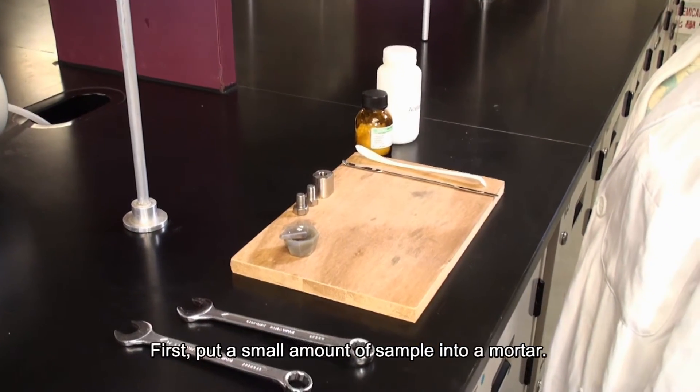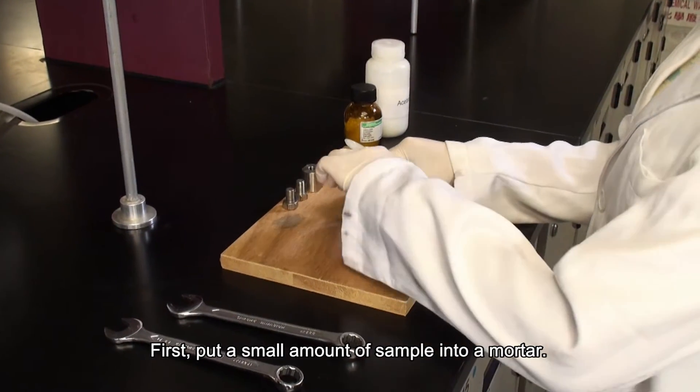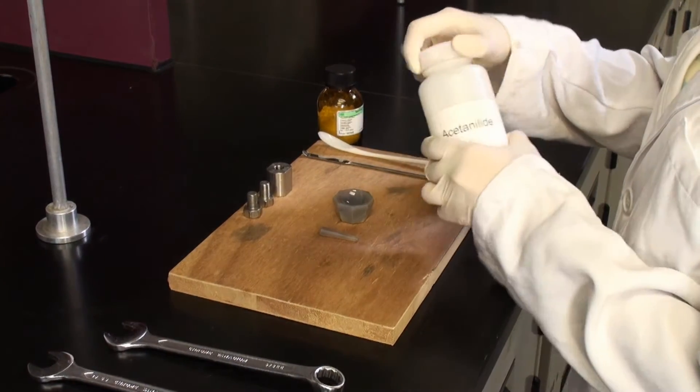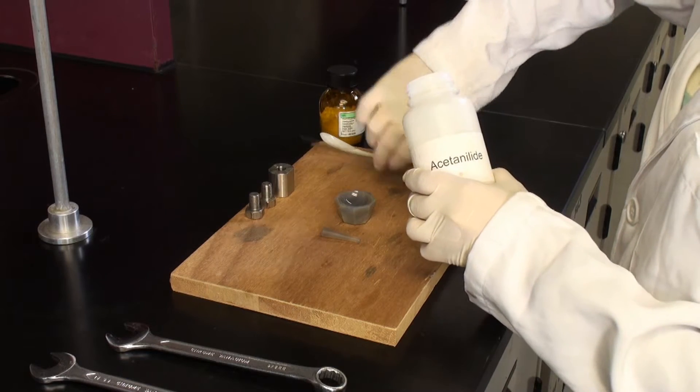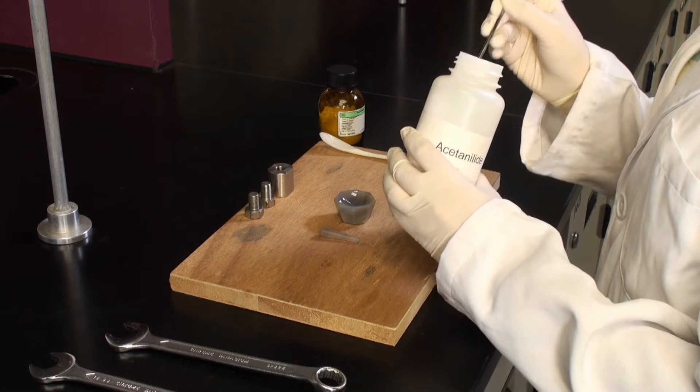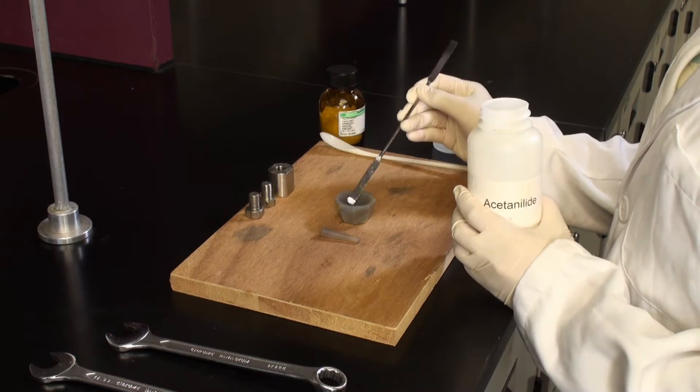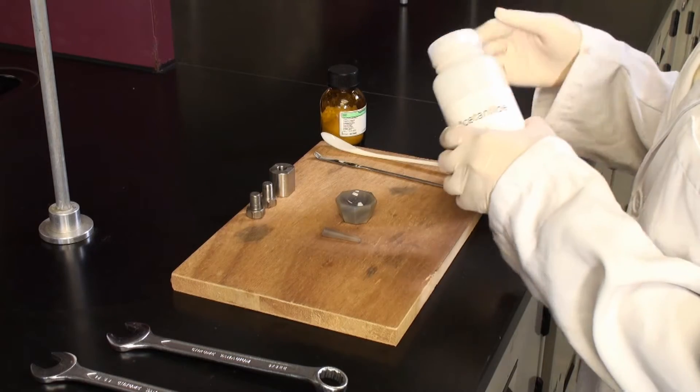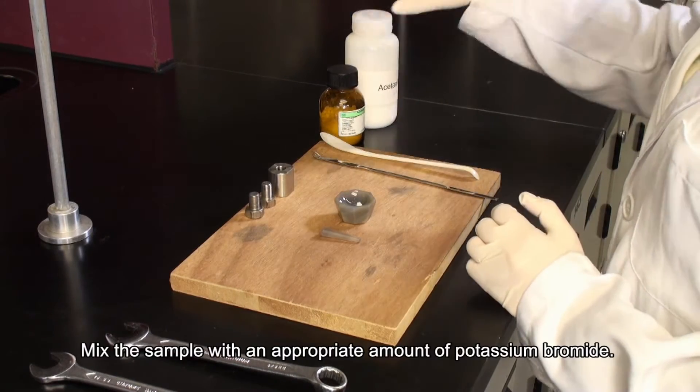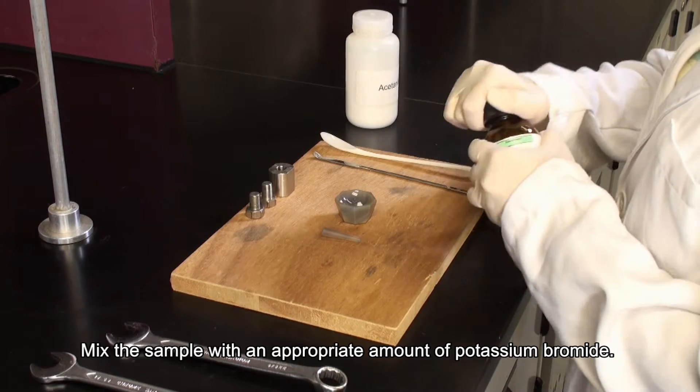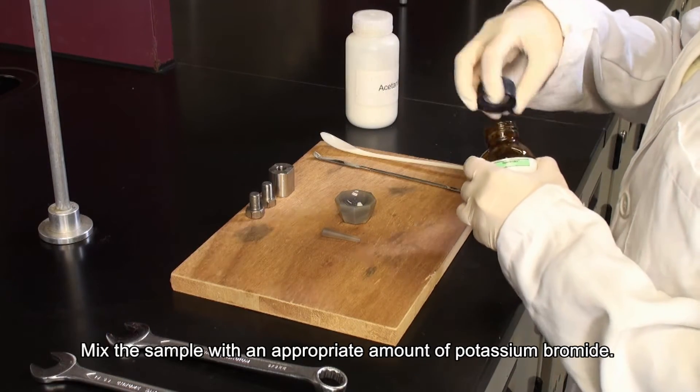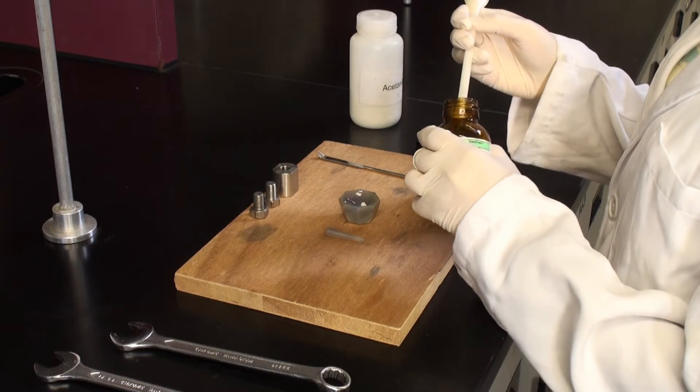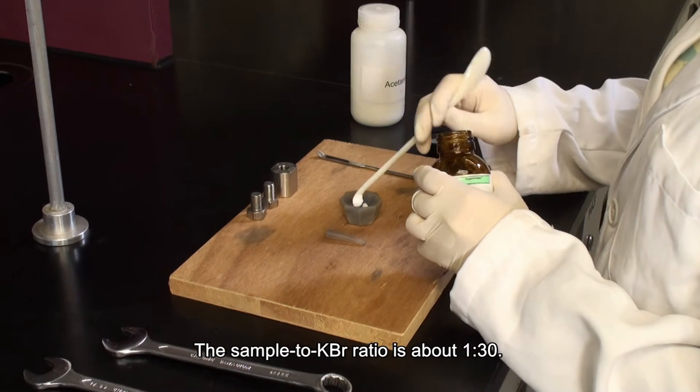First, put a small amount of sample into a mortar. Mix the sample with an appropriate amount of potassium bromide. The sample to KBr ratio is about 1 to 30.